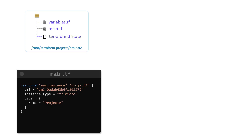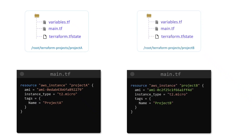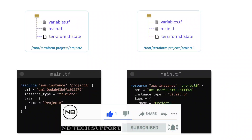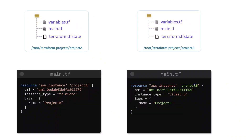It will also create a state file. Now, what if we want to replicate the same configuration for another project, say Project B, but with a different AMI ID and a server name compared to Project A? The logical way would be to create a new directory called Project B, copy the configuration files from Project A, change the AMI ID and tags as needed, and repeat the setup steps. However, the goal of using Terraform, or any IaC tool, is to eliminate repeatable steps and efficiently reuse existing code, as we saw in the module section.